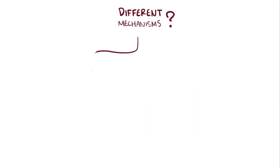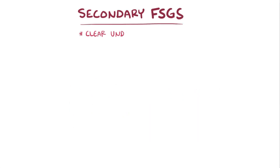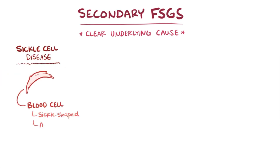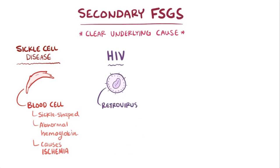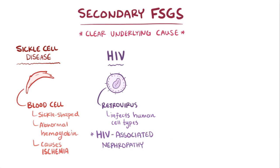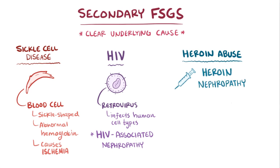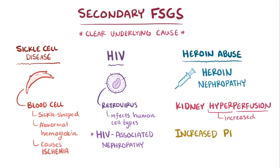As opposed to primary FSGS, secondary FSGS is when there's a clear underlying cause, and there are several important conditions that can be associated. Sickle cell disease, where blood cells are sickle-shaped due to a structurally abnormal hemoglobin protein that can cause tissue ischemia, has been linked to FSGS. HIV, a retrovirus that infects various human cell types, can also lead to FSGS and is called HIV-associated nephropathy. Heroin abuse has also been linked to FSGS, which is called heroin nephropathy. Also, other conditions like kidney hyperperfusion, or increased perfusion of blood, as well as increased pressure in the glomerular capillaries, have been linked to FSGS as well.